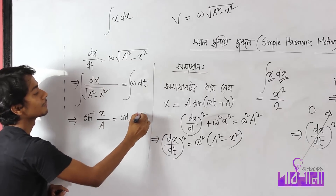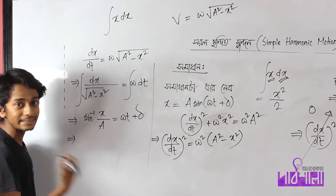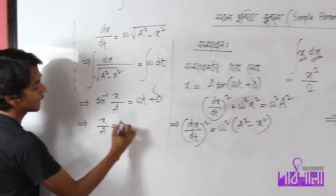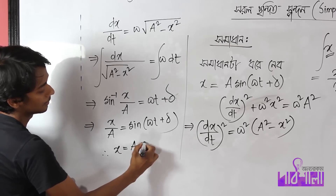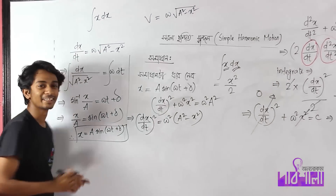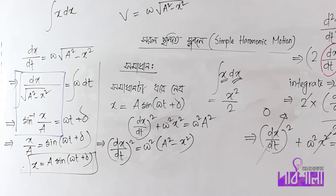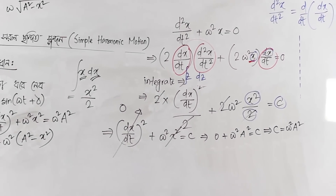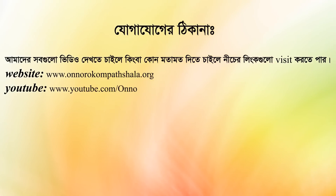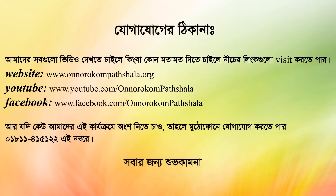Constant delta. So sin inverse x over a equals omega t plus delta. Therefore x equals a sin(omega t plus delta). Thank you.